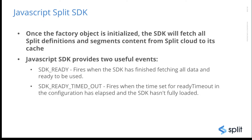The JavaScript SDK provides two very useful events. The first event is SDK Ready. This event fires when the SDK has finished fetching all the data — the split definitions and the segments — and it's ready to be used, meaning you are ready to make the getTreatment call. The SDK Ready Timed Out event fires when fetching takes longer than the ready timeout parameter specified in the configuration.